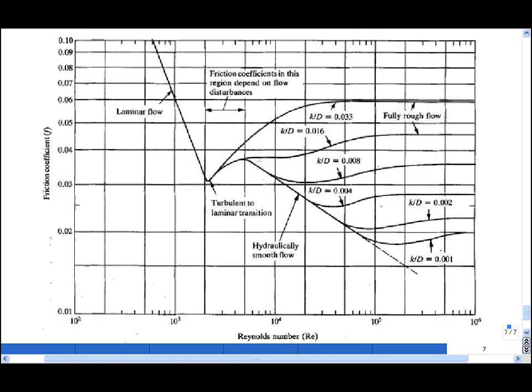However, for a given Reynolds number and pipe roughness, one can measure the friction coefficient and then plot it as a function of the Reynolds number and the pipe roughness.